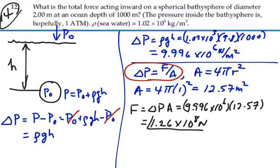So that would be the total force on the bathysphere, 1.26 times 10 to the 8 newtons. There's a slight variation in the height of the bathysphere, but for all practical purposes, that would be the pressure at that depth, and this would be the force: 1.26 times 10 to the 8 newtons.